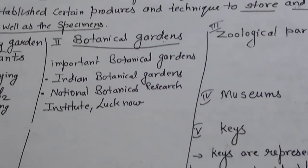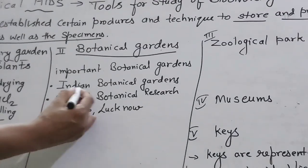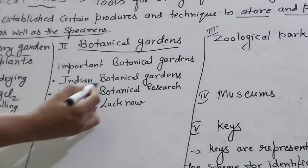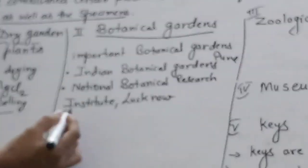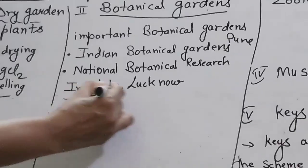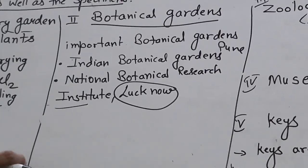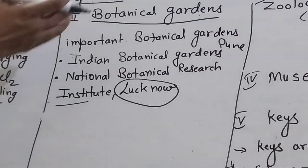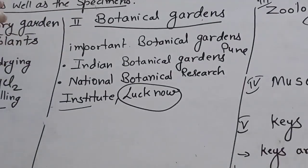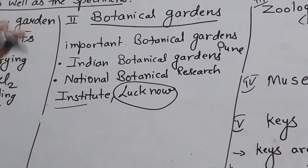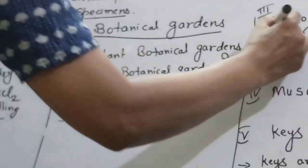Two very famous botanical gardens in India are: the Indian Botanical Garden, which is in Pune, and the National Botanical Research Institute, which is world famous and is located in Lucknow. There are many more, and I am going to provide a list. You can note them down, as their names are sometimes asked in exams. Just keep this information with you.